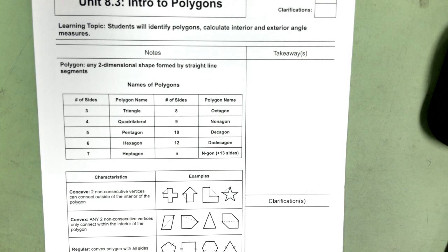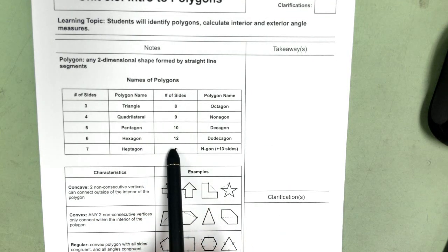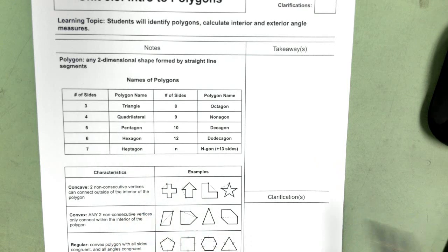In this section we're going to start looking at polygons. A polygon is any two-dimensional shape formed by straight line segments. In this table here you have the different names of polygons which is based on the number of sides.